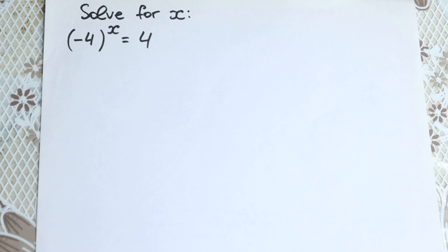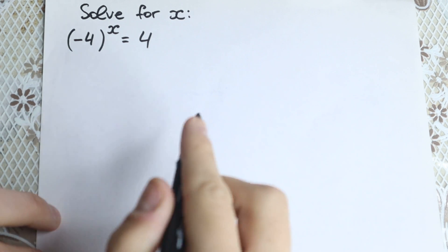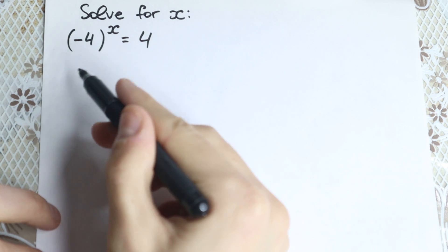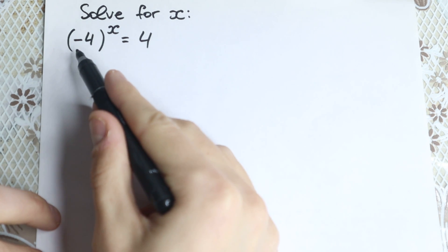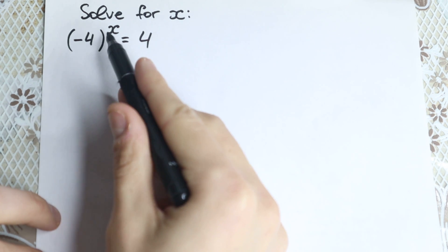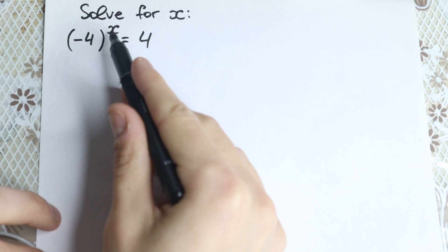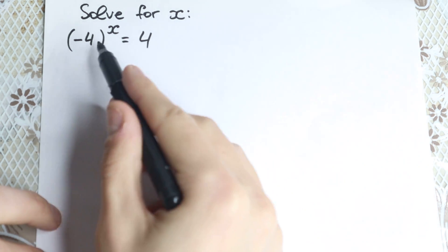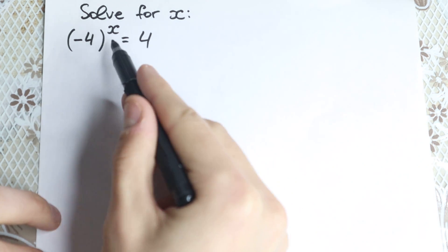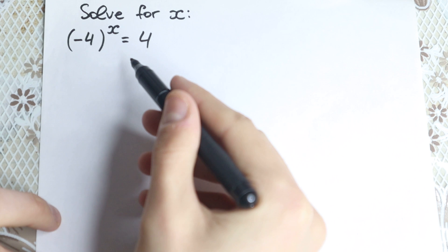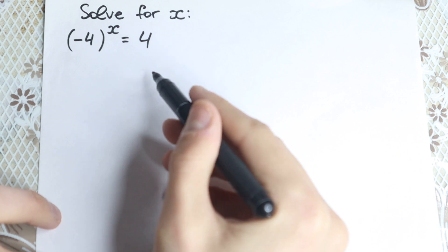Hello everyone! Really interesting exponential equation today: minus 4 to the x equals 4. It looks like an easy equation, but we have a minus right here, so it's not like we can obviously say that x equals 1, which is absolutely incorrect, because minus 4 to the first power equals negative 4, not 4.